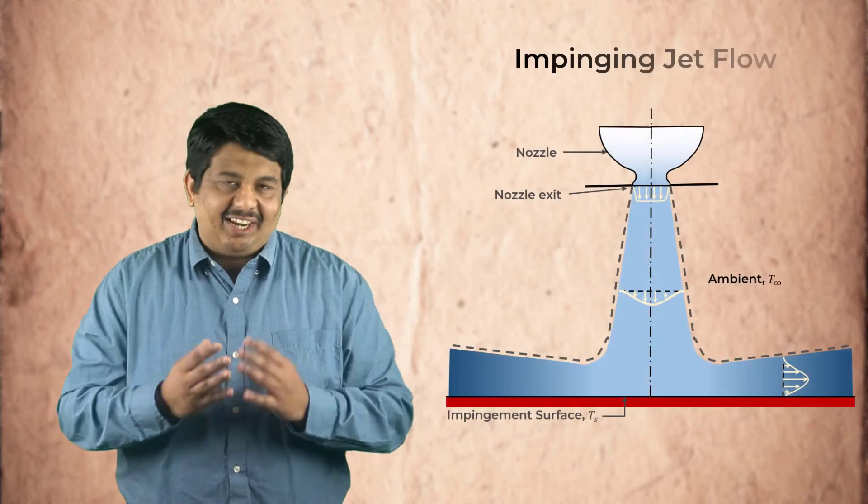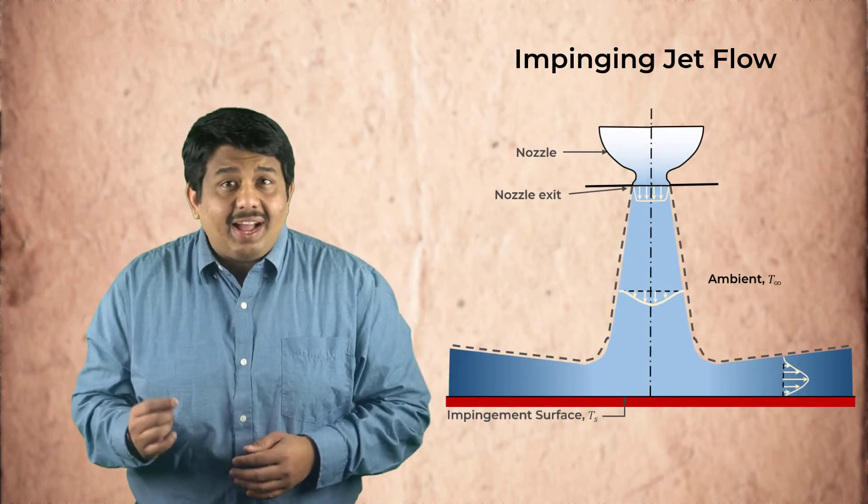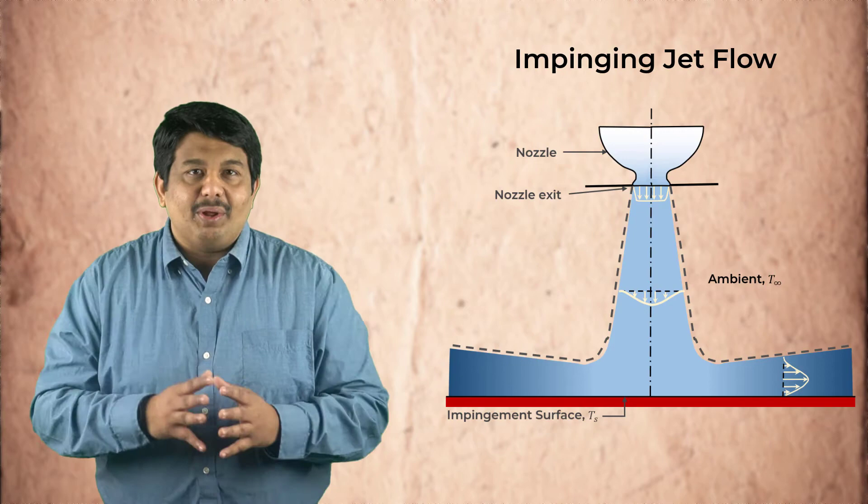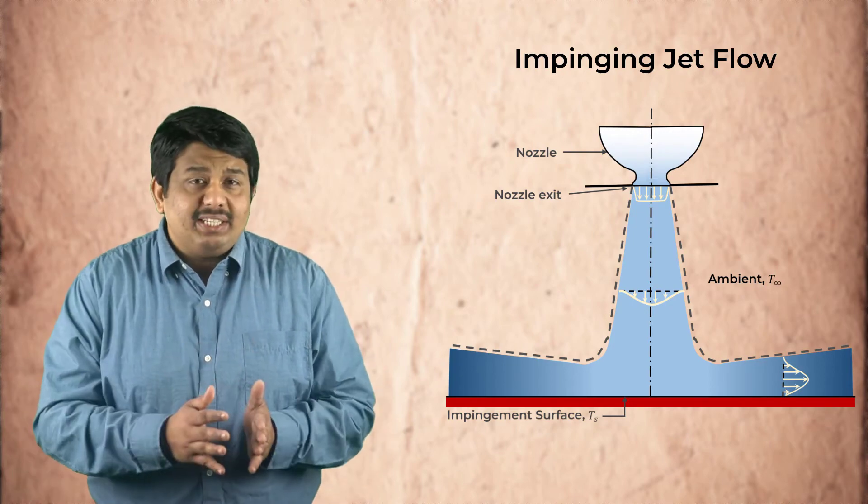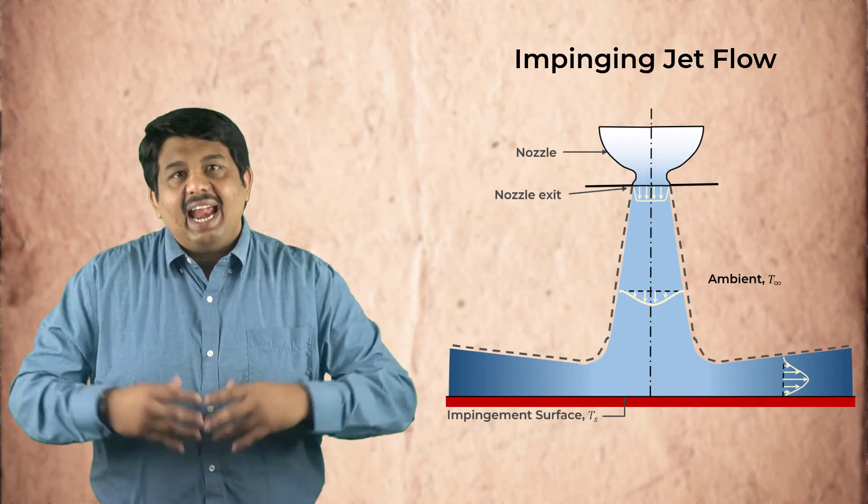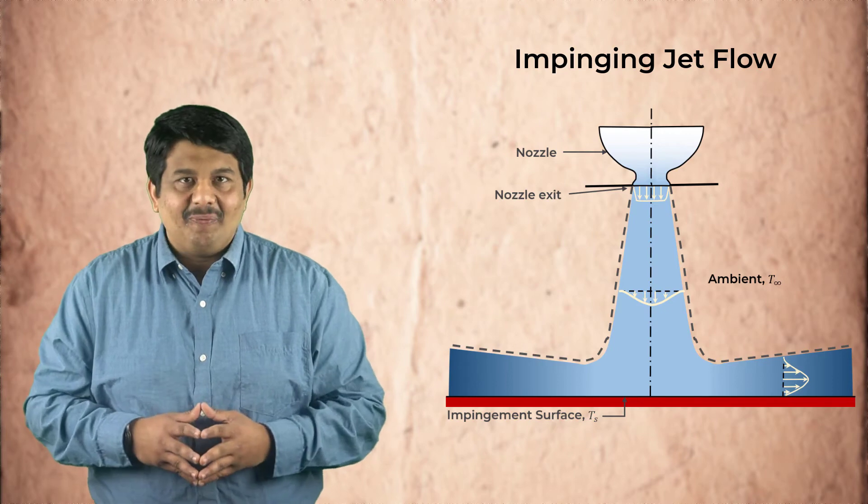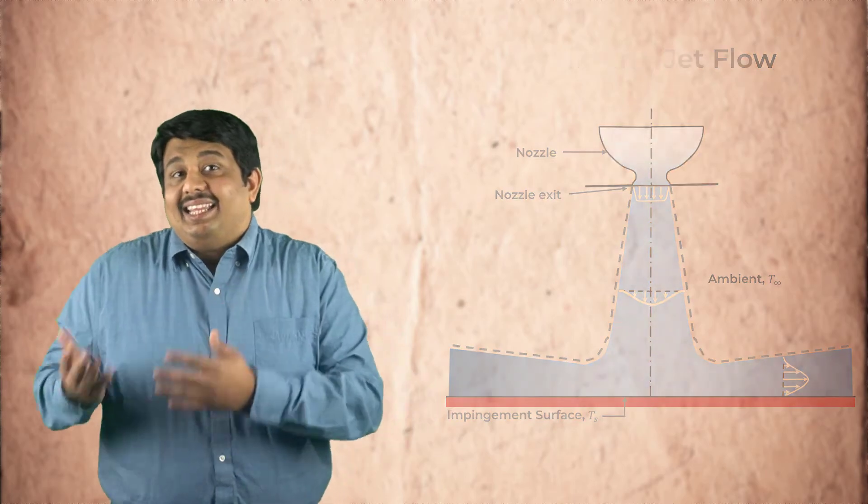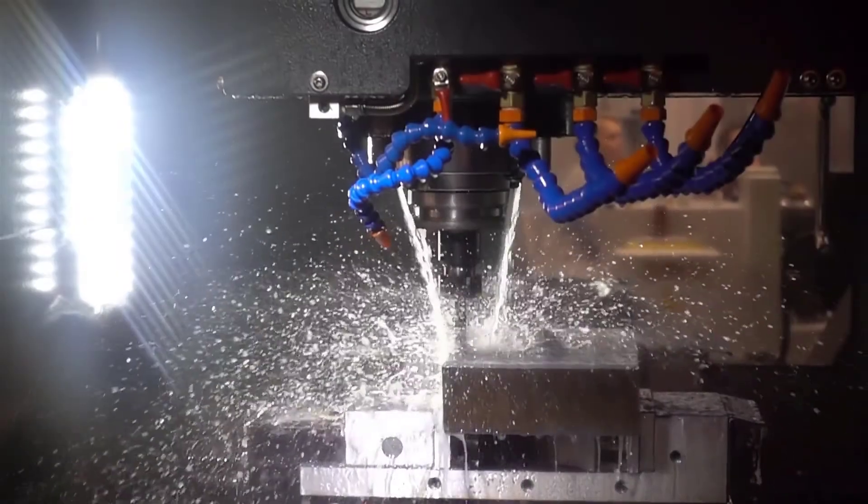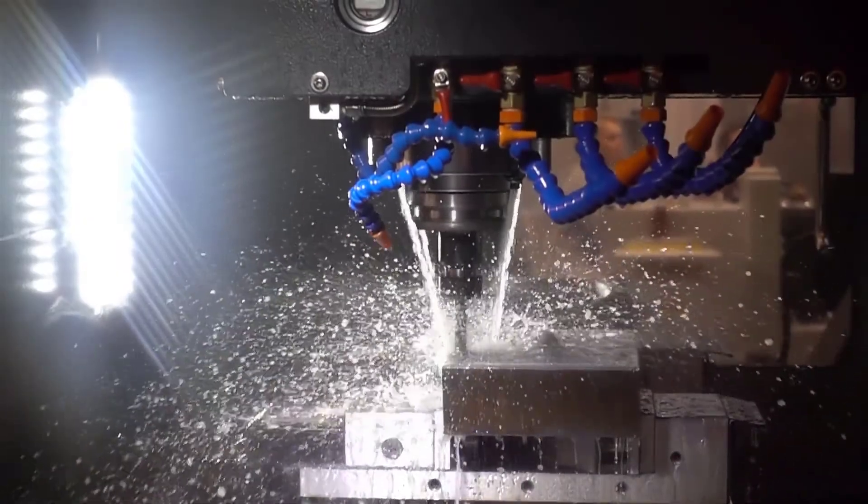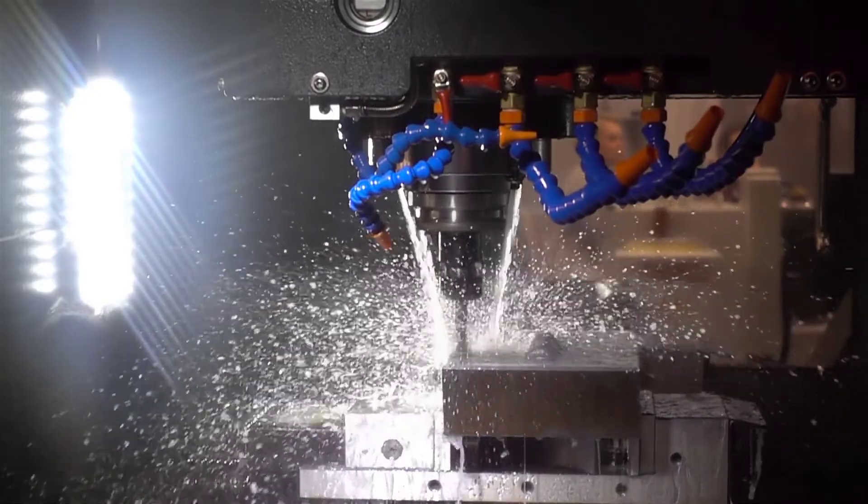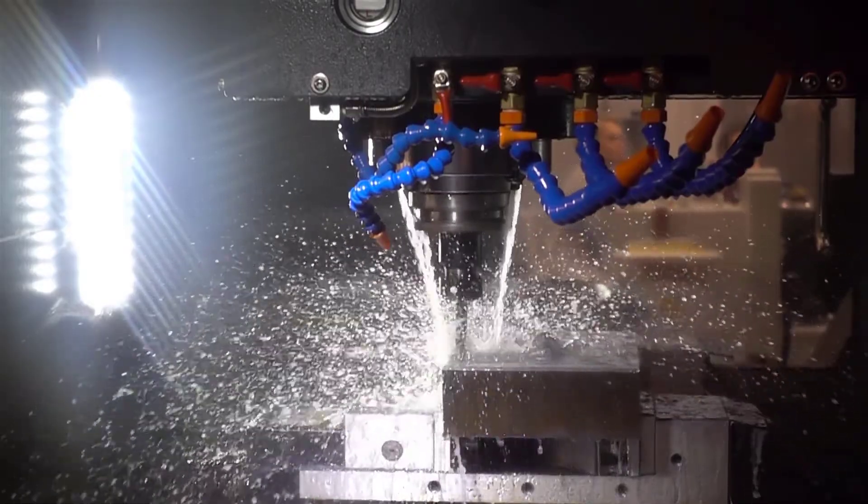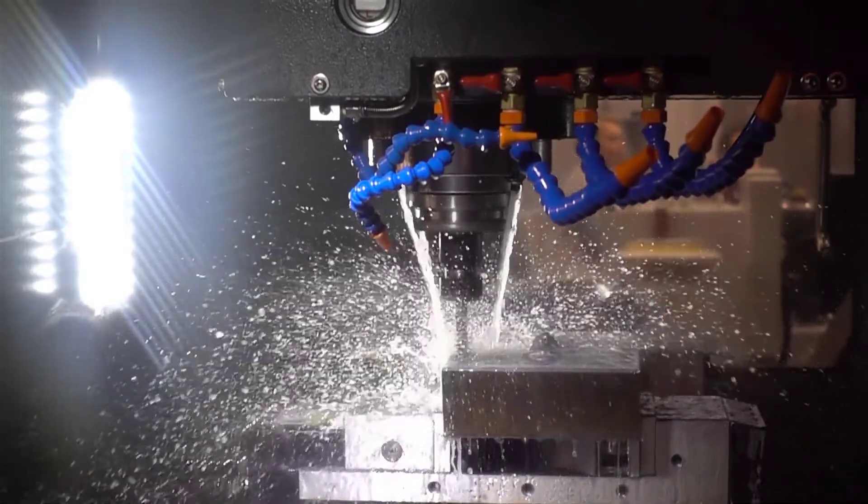Let us now shift gears and look at a different type of external flow: an impinging jet flow. When a fast-moving fluid exhausting from a nozzle or pipe impinges on a solid surface, it is called an impinging jet flow. These types of flows are used to achieve enhanced heat transfer rates in applications such as milling, glass tempering, de-icing of aircrafts, and other applications.